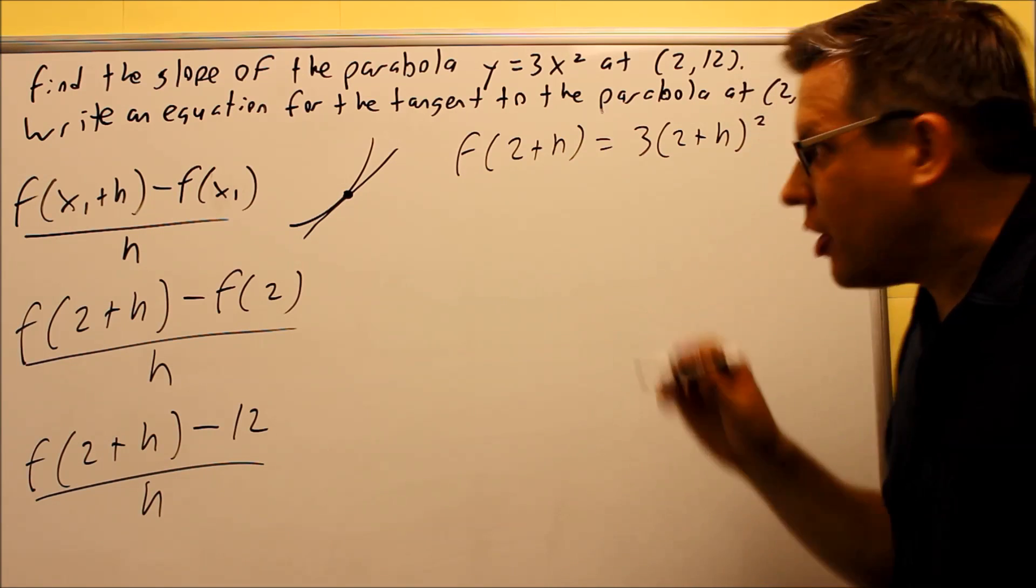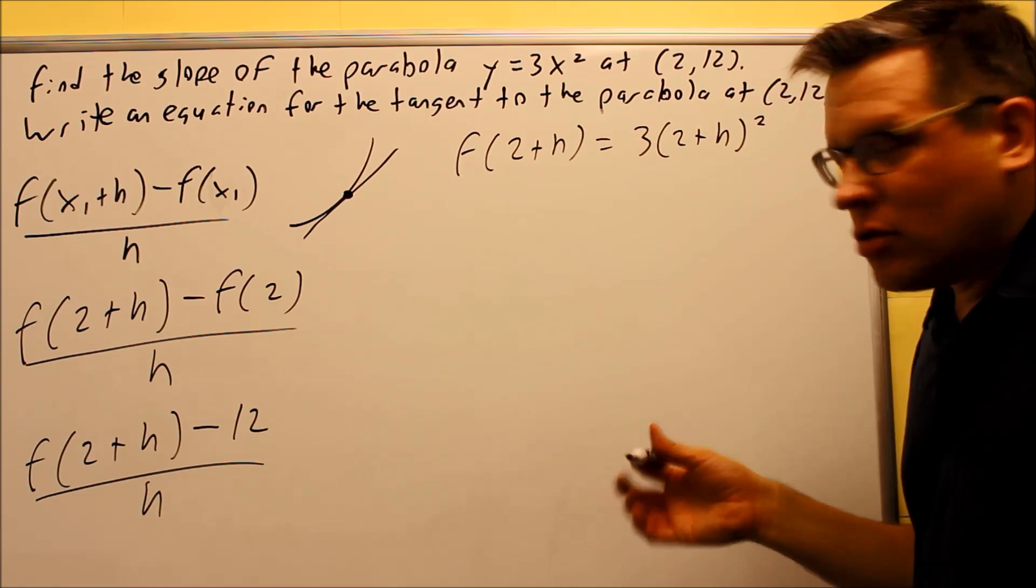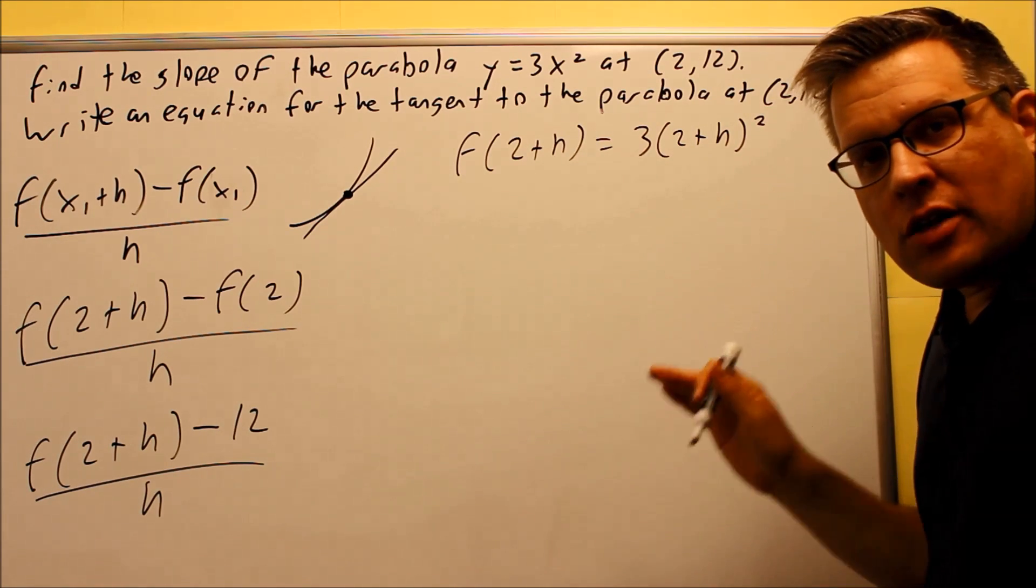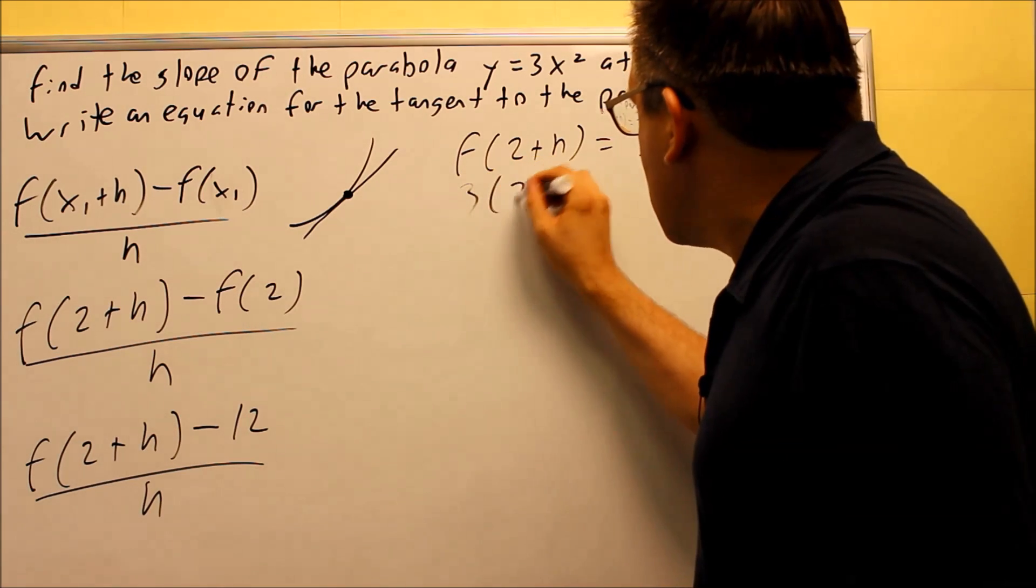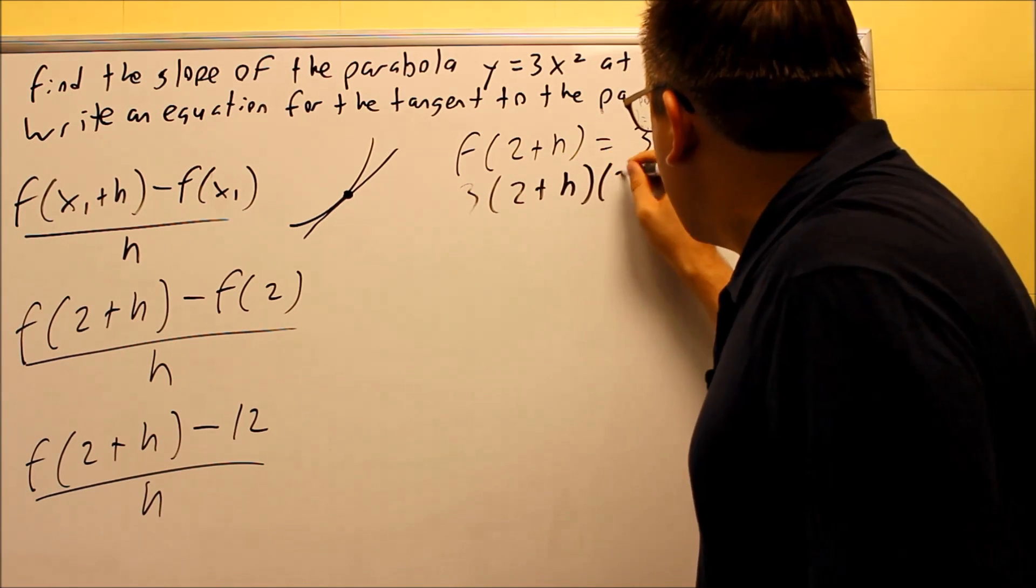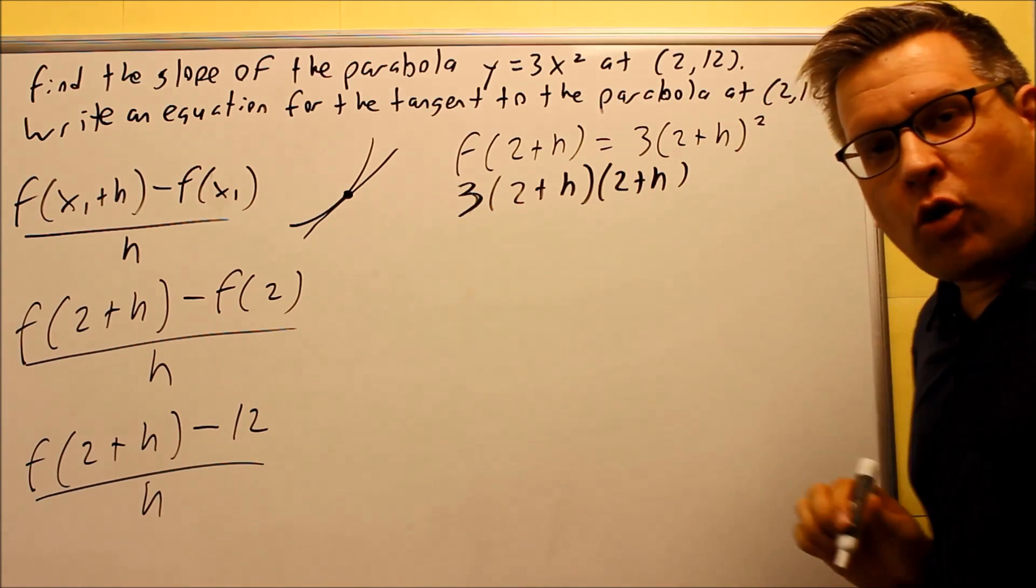Second, I don't want to see anybody squaring the 2 and squaring the h and that's your final answer. This means that you've got to multiply 2 plus h times 2 plus h. So let's work it out and do it correctly so that way you guys will know the correct procedure for doing that.